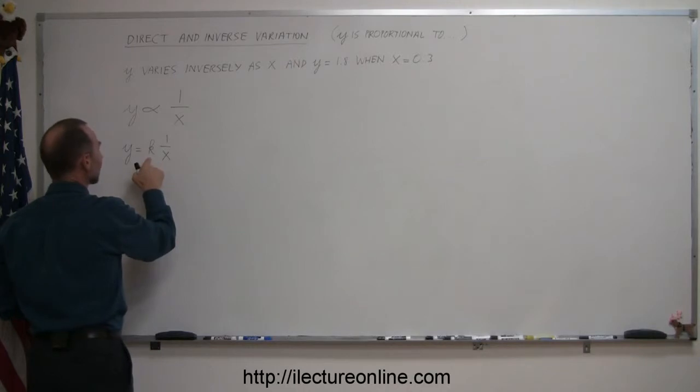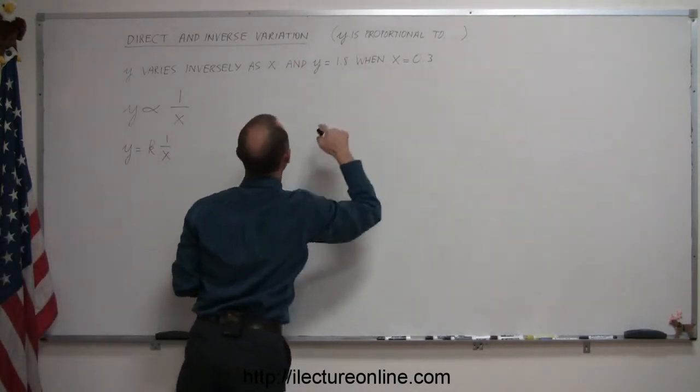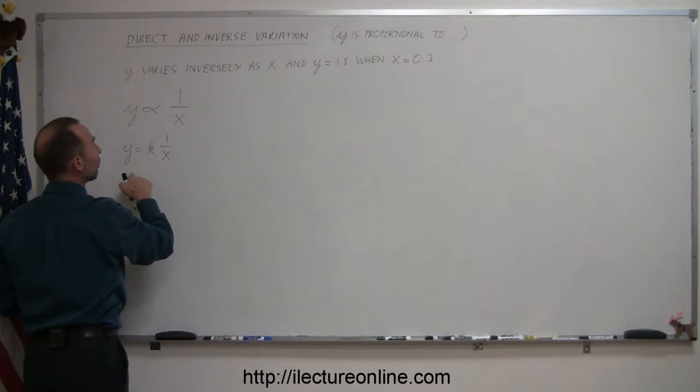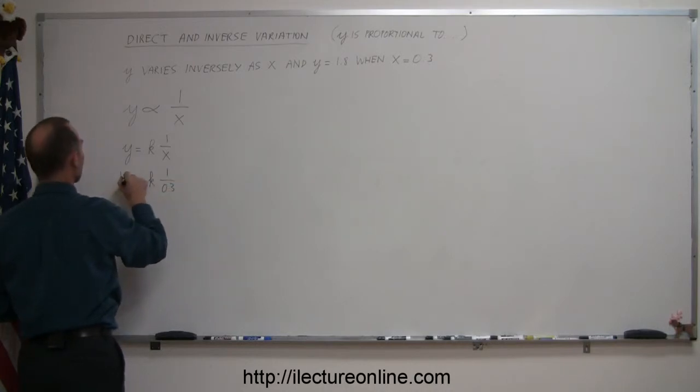Now to find the value for k we have to plug in the values for y and x that we were given. So when x is equal to 0.3, y is equal to 1.8.